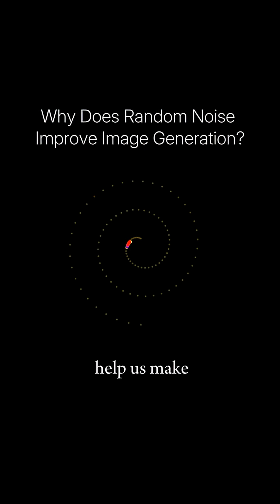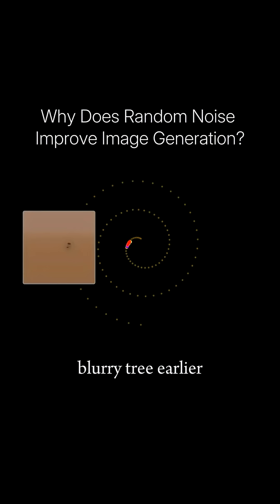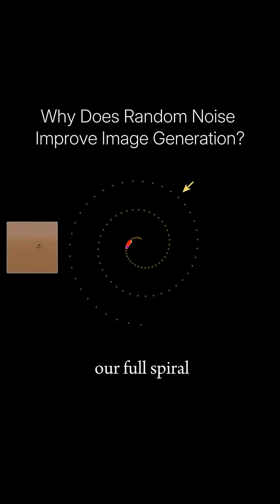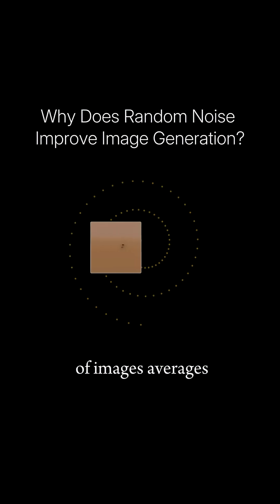This result can help us make sense of why we saw a sad blurry tree earlier when we removed this random noise step. Instead of capturing our full spiral distribution, all of our generated points end up close to the center or average of our spiral. In the space of images, averages look blurry.